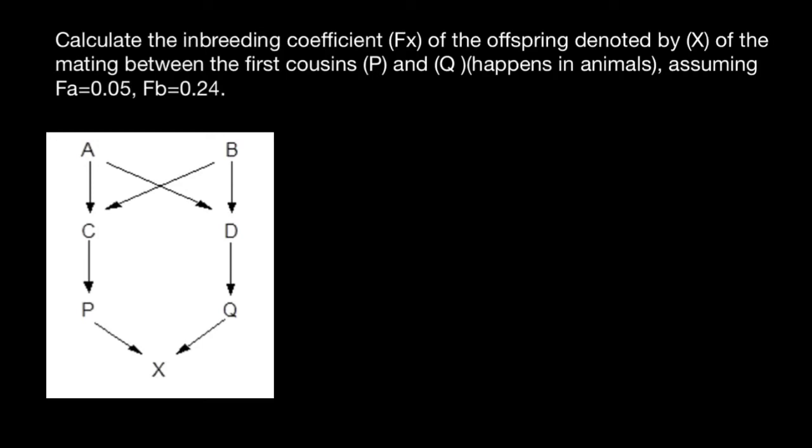Hello and welcome to Nikolai's genetics lessons. Today's problem is: calculate the inbreeding coefficient F of X, the offspring denoted by X of the mating between the first cousins P and Q. So P and Q are first cousins and we have to calculate inbreeding of X.